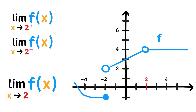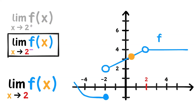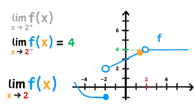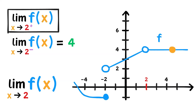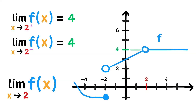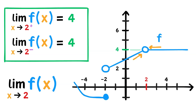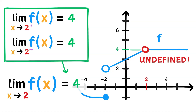Here's another example. Does the limit of f of x as x approaches 2 exist? Well, taking the one-sided limits, as x approaches 2 from the left, f of x approaches 4. From the right, f of x also approaches 4. The one-sided limits are the same, so this means the limit of f of x as x approaches 2 is 4. Notice that although f of 2 is undefined, the limit still exists. As long as the one-sided limits exist, we're fine.